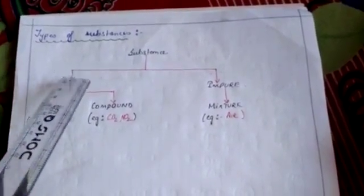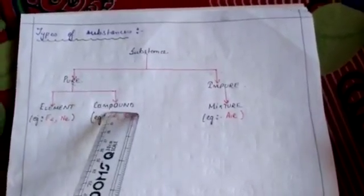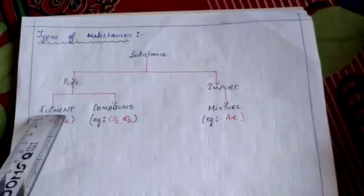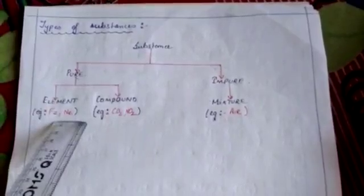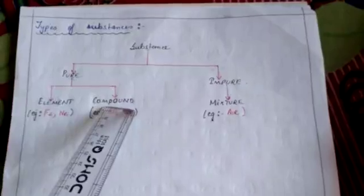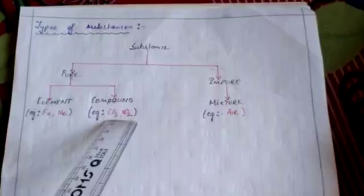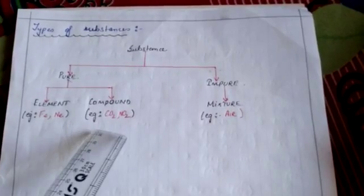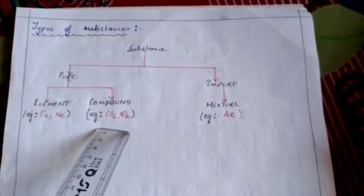Pure substance is further divided into two categories: elements and compounds. Elements are those substances which are made up of only one kind of atom — for example, iron (Fe) and neon (Ne). A compound is made up of two or more elements combined together in a fixed proportion, like carbon dioxide, which is made of one atom of carbon and two atoms of oxygen combined to form CO₂.